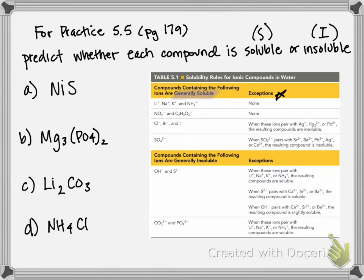For ions such as the halogens, if they're for some reason paired with silver, mercury, or lead, those compounds are going to be insoluble. Same with sulfate. Sulfates are typically soluble unless they're paired with strontium, barium, lead, silver, or calcium. Then they're insoluble.